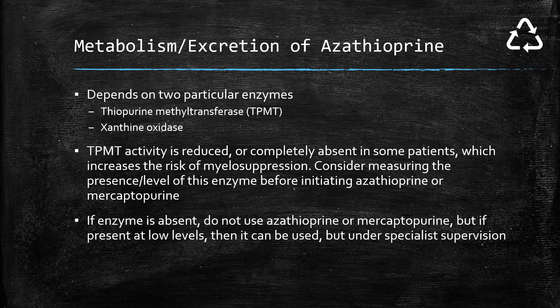In terms of the metabolism and excretion of azathioprine, there are two enzymes in particular: thiopurine methyl transferase, or TPMT for short, and xanthine oxidase. TPMT has to be tested before starting azathioprine or 6-mercaptopurine because it's a very important enzyme - one of the main metabolic pathways in the body. In patients who have a low level of the enzyme, they're going to have slightly higher levels of azathioprine in the body. People who don't have the enzyme at all face a greater risk of toxicity, since there's an enzyme missing that would normally break azathioprine down, leading to more azathioprine in the body for a longer period of time, and that's where you can get myelosuppression or bone marrow suppression.